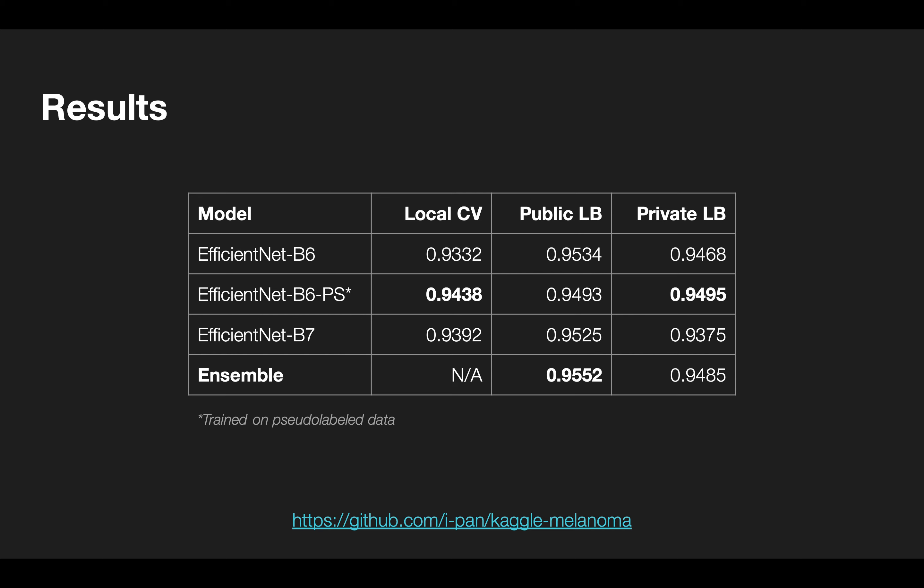This is a summary of the results of my final models. The EfficientNet B6 model trained on pseudolabeled data performed the best, even better than the ensemble. Unfortunately, I didn't end up selecting this model as one of my final submissions. The B7 model performed worse than the other two models. The variation across cross-validation and public-private leaderboard scores made this a challenging competition.